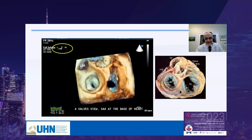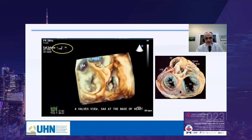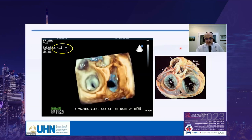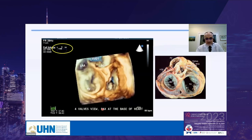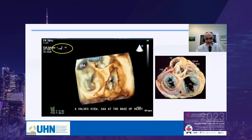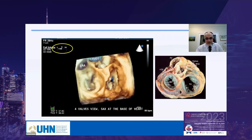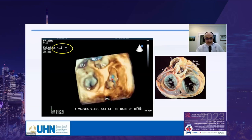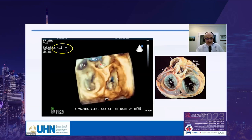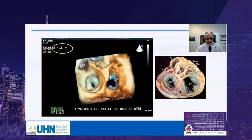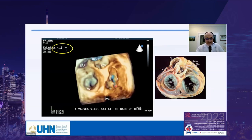At our center, the first 3D TEE view I obtained — back when I was in Saudi Arabia in 2010 — showed three or four valves simultaneously. It was very exciting. This view closely resembles the anatomical specimen, showing the posterior leaflet, anterior leaflet, and septal leaflet, with the aortic valve wedged between the tricuspid and mitral valves.